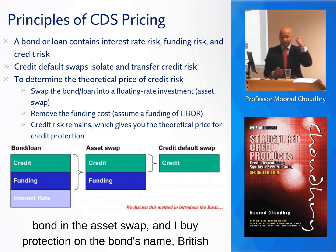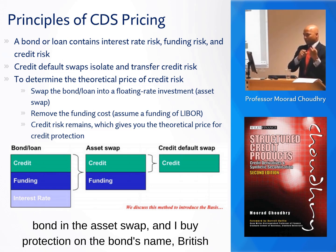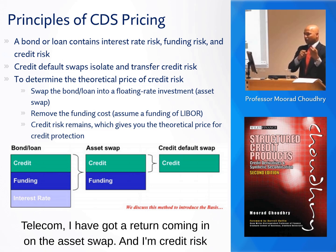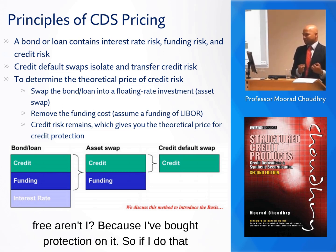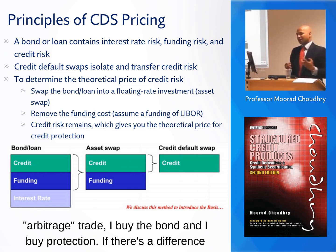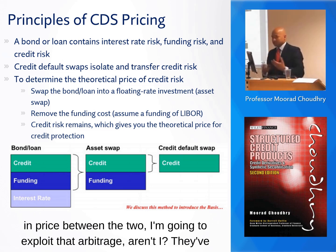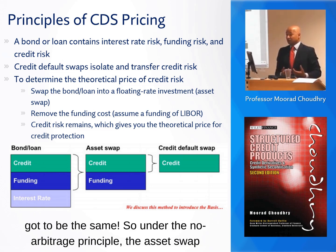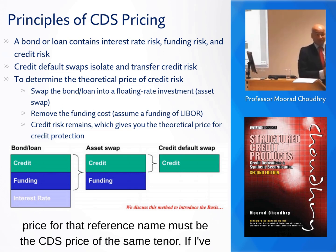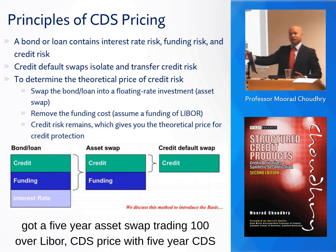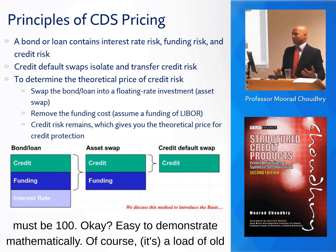Because if I buy the bond in the asset swap and buy protection on the CDS on British Telecom, I have a return coming in on the asset swap and I'm credit risk-free, because I bought protection. So if I do that arbitrage trade and there's a difference in price between the two, I'm going to exploit that arbitrage — they've got to be the same. Under no-arbitrage principles, if I've got a five-year asset swap trading at 100 over LIBOR, the five-year CDS price must be 100.